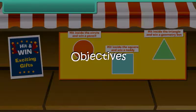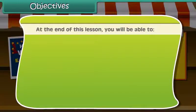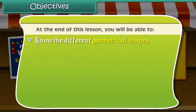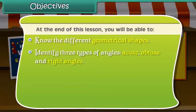Objectives. At the end of this lesson, you'll be able to know the different geometrical shapes, identify three types of angles: acute, obtuse and right angles.